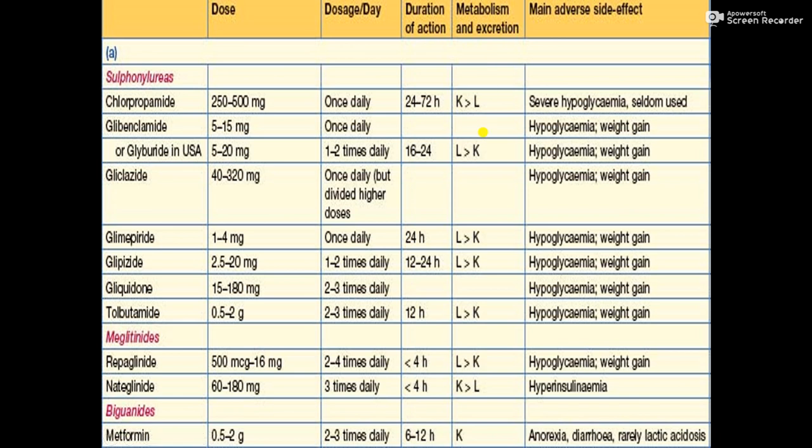For solid oral dosage forms, all drugs must be metabolized in the liver before reaching systemic circulation — this is the first-pass effect. The liver is the major organ responsible for metabolism, after which the drug is excreted from the body. Tolbutamide is dosed at 0.5 to 2 grams, taken 2 to 3 times daily, with a duration of action of 12 hours, and also causes hypoglycemia and weight gain.